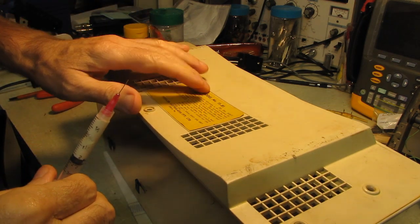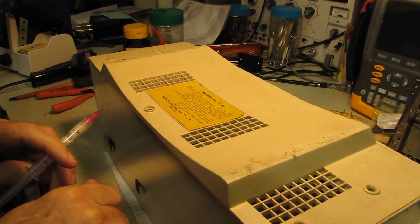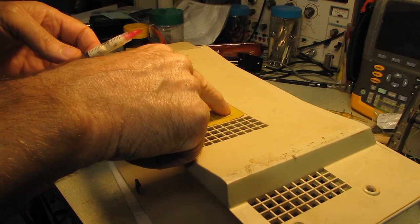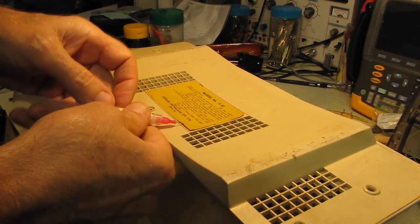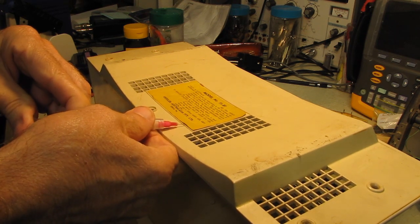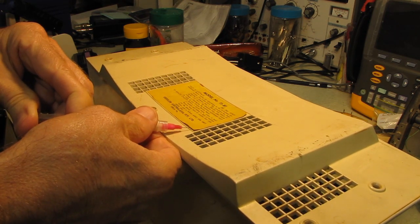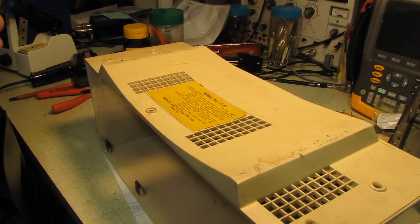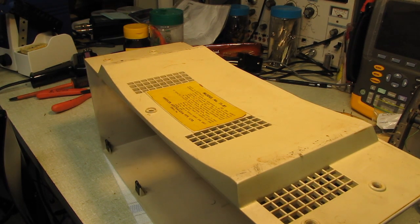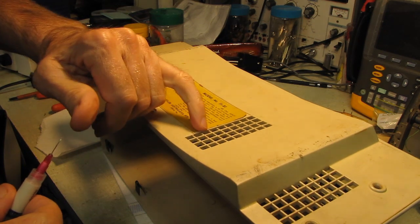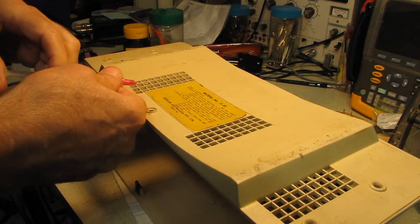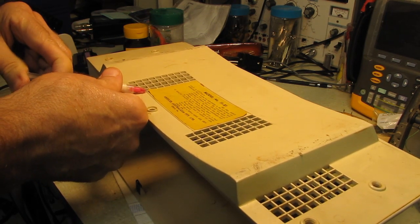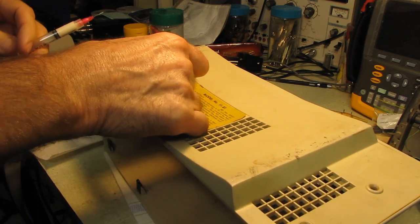The paper that's on the bottom the data plate nomenclature plate whatever you want to call it is extremely fragile splitting and starting to lift so we're going to inject some adhesive underneath here and hopefully stabilize it. And in another 60 years or 57 years whatever it's been since this was manufactured this will still be intact and usable.